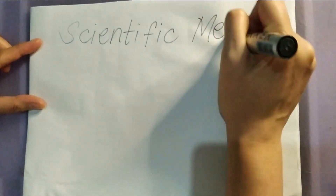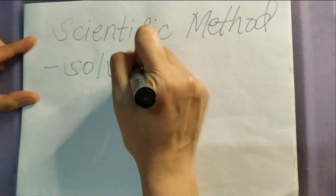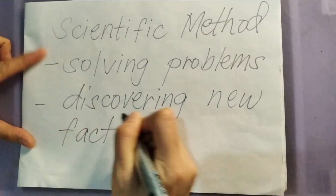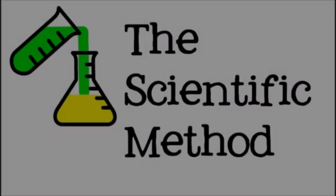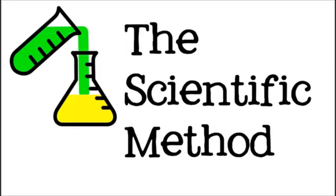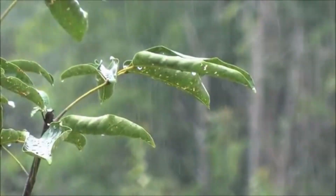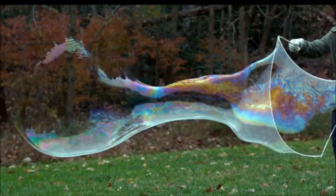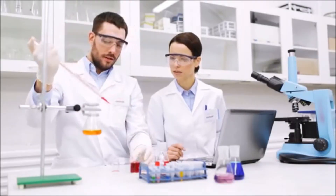The scientific method is an orderly, logical way of solving problems and discovering new facts. It involves the principles and procedures for the systematic pursuit of knowledge, including the recognition and formulation of a problem, the collection of data through observation and experiment, and the formulation and testing of hypotheses.